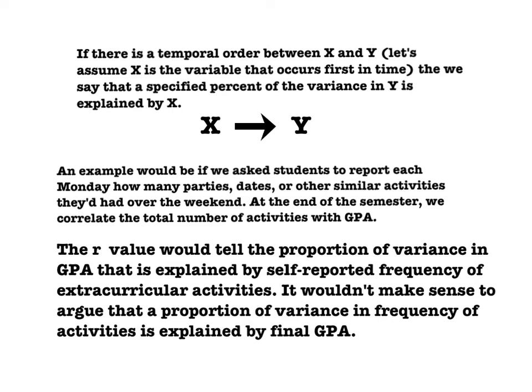The r-squared value would tell the proportion of variance in grade point average that's explained by self-reported frequency of extracurricular activities. It wouldn't make any sense to argue that the proportion of variance in frequency of activities is explained by GPA. So the temporal order of the variables in this case is very important.